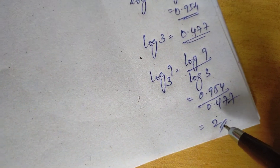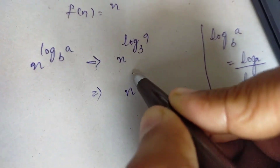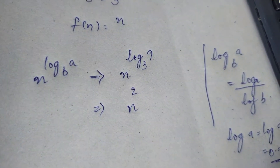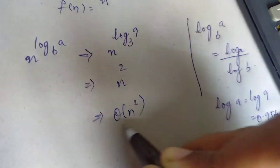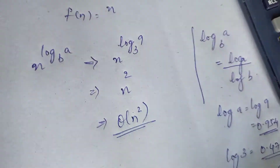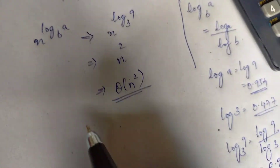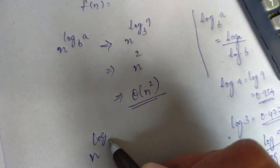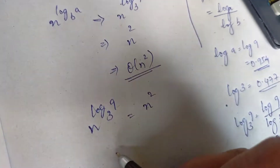Now, log 9 base 3 value is 2. So that is n raised to 2, that is n squared. Now we have theta of n squared. We have to confirm that theta of n squared — now log base 3 of 9 gives us n squared.